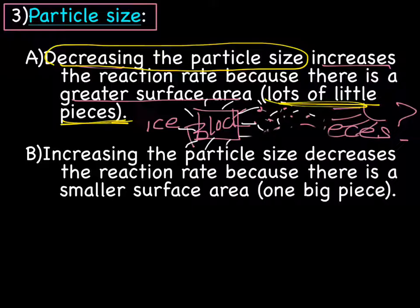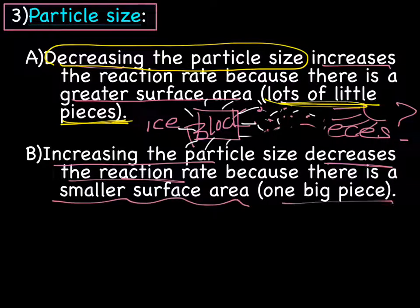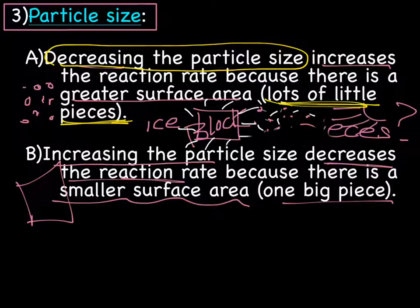Conversely, if you increase particle size, you're going to decrease reaction rate because there's a smaller surface area — we're talking about one big piece. So once again: if you decrease particle size, you end up increasing surface area, and you increase reaction rate. If you increase particle size, you have less surface area because you've just got one big piece, and you end up decreasing the reaction rate.